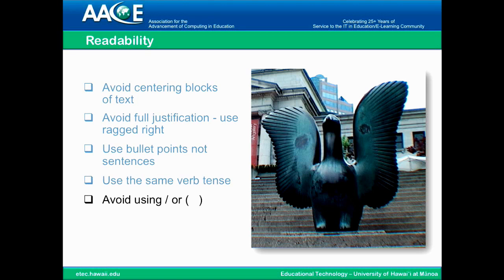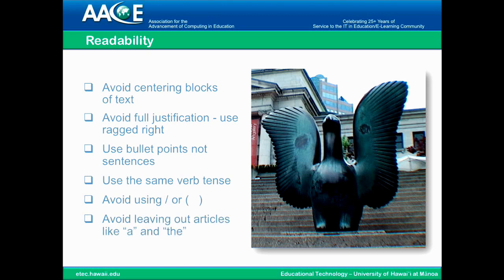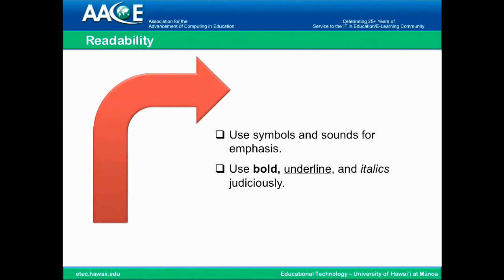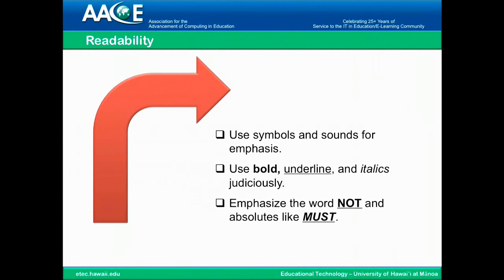Avoid leaving out articles like 'a' and 'an' — people find it confusing when those are left out; it looks like something is incorrect, and when you're trying to read it from the screen it will confuse you, so it's much better to leave them in. You can use symbols and sounds for emphasis. You can use bold, underlined, or italics, but use them judiciously or they don't work very well. Emphasize words like 'not' or absolutes like 'must' so that your audience is clear.